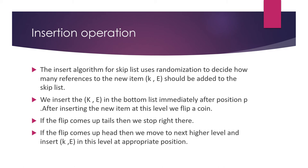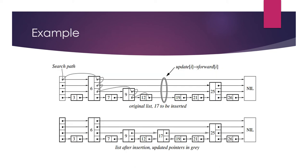For the insertion operation, we have to decide how many references to the new item should be added to the skip list. The key-value pair (k, e) is inserted in the bottom list immediately after position p. After inserting the new item at this level, we flip a coin. If the flip comes up tails, we stop right there. If the flip comes up heads, we move to the next higher level and insert the element.